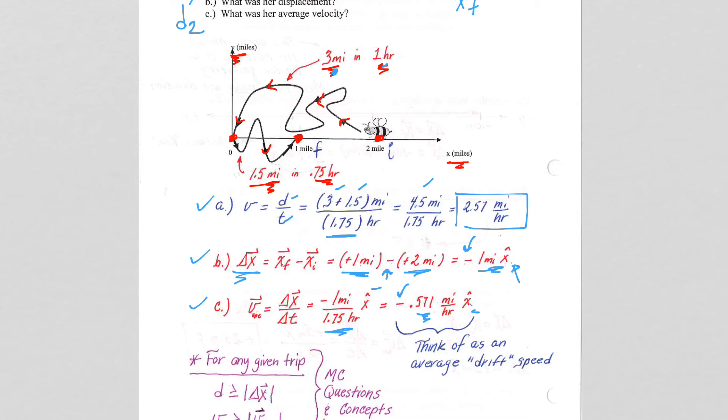And this is important, so please get this down into your notes. The interpretation of average velocity physically can be thought of - we can think of the average velocity as kind of the average drift of the bumblebee to the left. So regardless of all the zigging and zagging that it was doing, even if I don't care about the zigging and zagging, all I care about is, on average, how much did this bumblebee move along the x-axis? The average velocity in the x direction, delta x over delta t, tells me that. So on average, it was drifting to the left at 0.571 miles per hour, and the negative indicates that it was to the left.